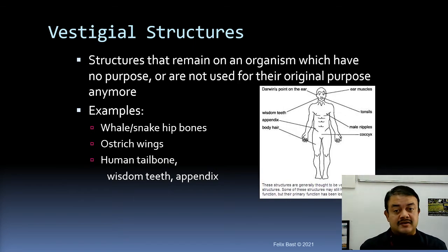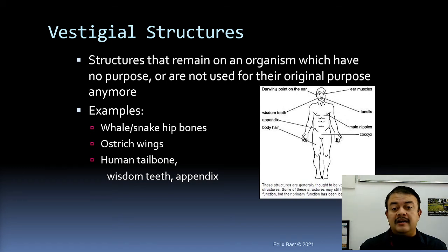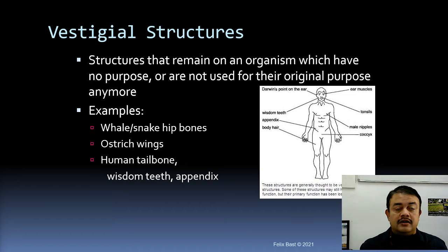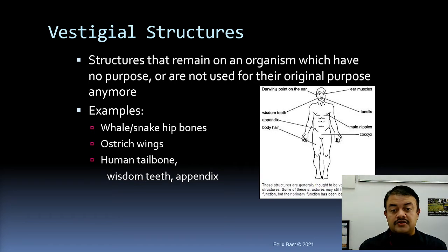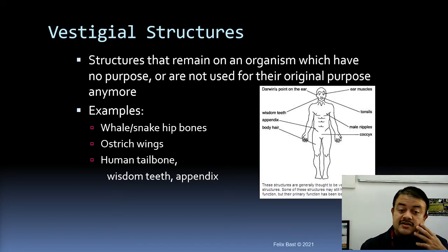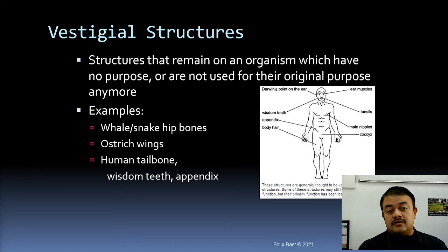Vestigial structures provide yet another evidence of evolution. These are structures that remain on an organism which have no current function, or are no longer used for their original purpose. Examples include hip bones in whales and snakes, ostrich wings, the human tailbone (coccyx), wisdom teeth, and the appendix — all of which still exist even though they serve no apparent function today.